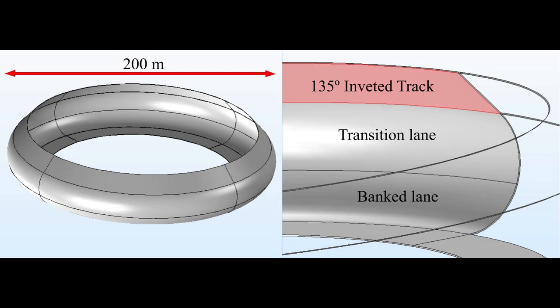The circular inverted track has advantages compared to a linear inverted track. For one, the pilot can take his time to transition between the upside right to upside down positions.